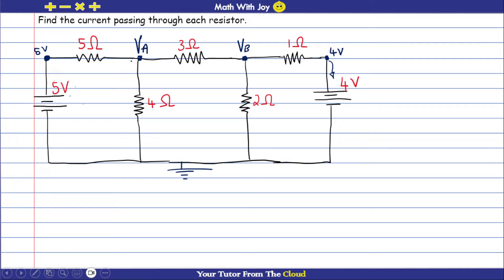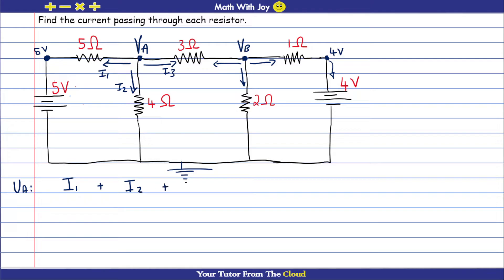Now that we have this set up, we can write our equations. Nodal analysis says the sum of all currents going in and out of a node equals zero. I'll assume all currents are going out of the node — that makes it easier to set up equations. I'll label the currents: I1, I2, and I3. For node VA: I1 + I2 + I3 = 0.